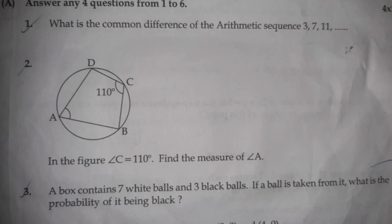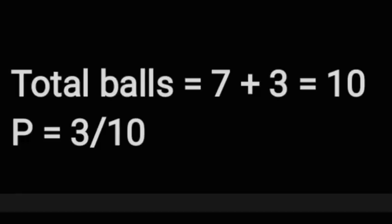Question 3: A box contains 7 white balls and 3 black balls. If a ball is taken from it, what is the probability of it being black? Total balls is equal to 7 plus 3 equals 10. Probability is equal to 3 by 10.